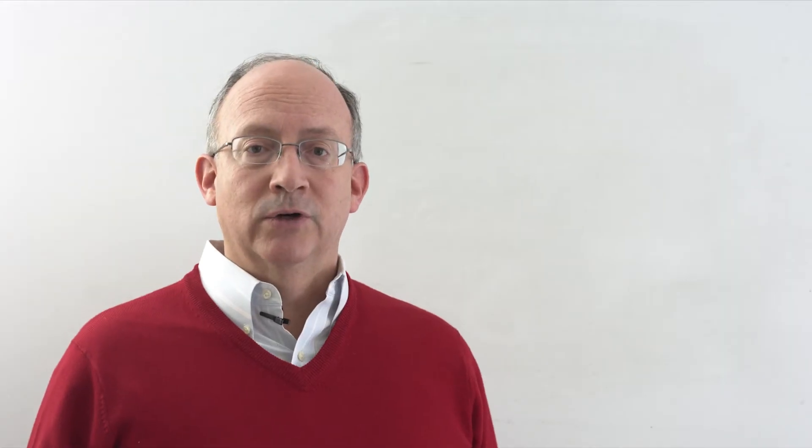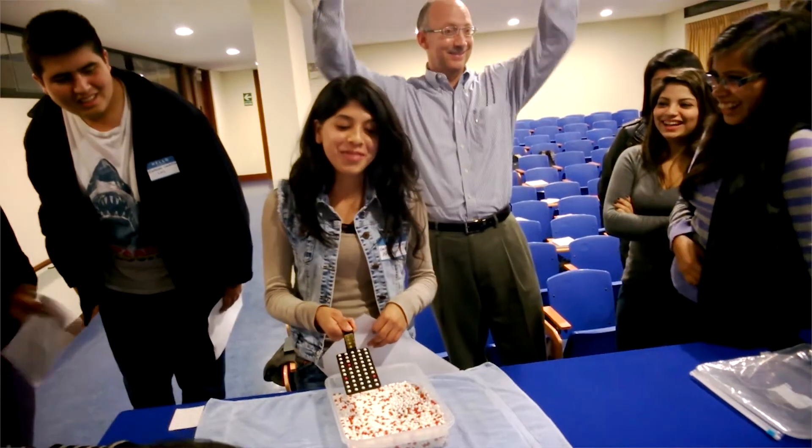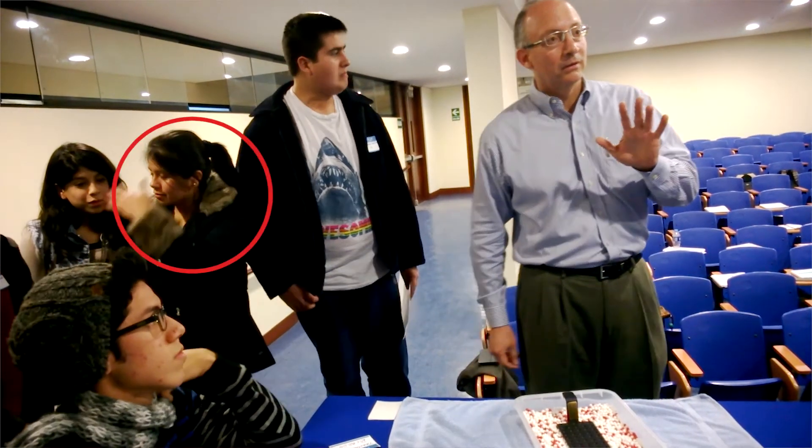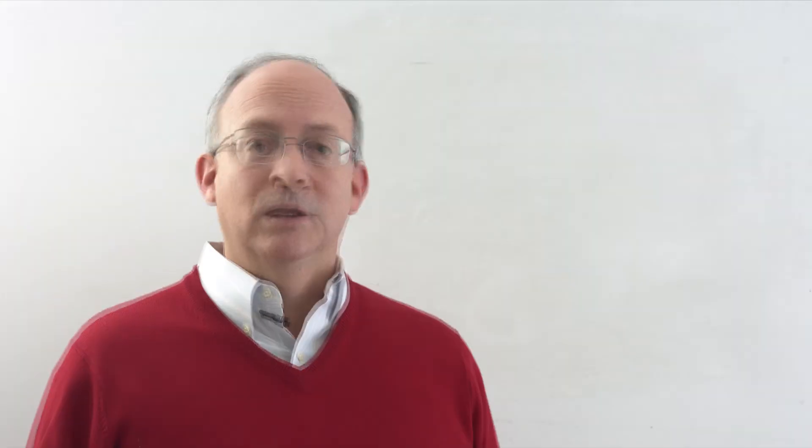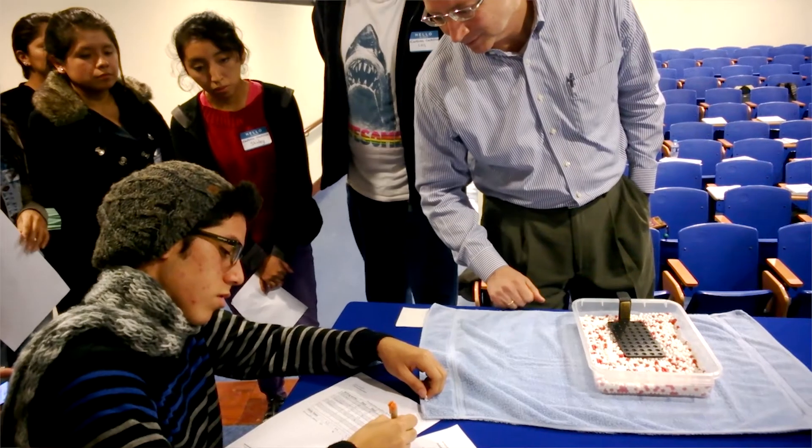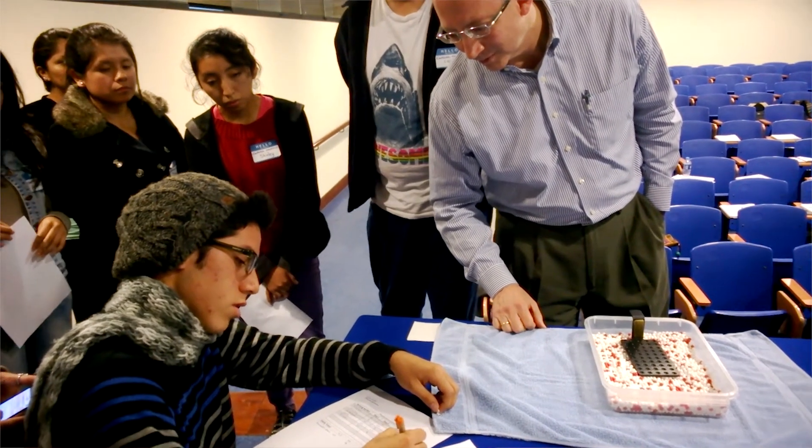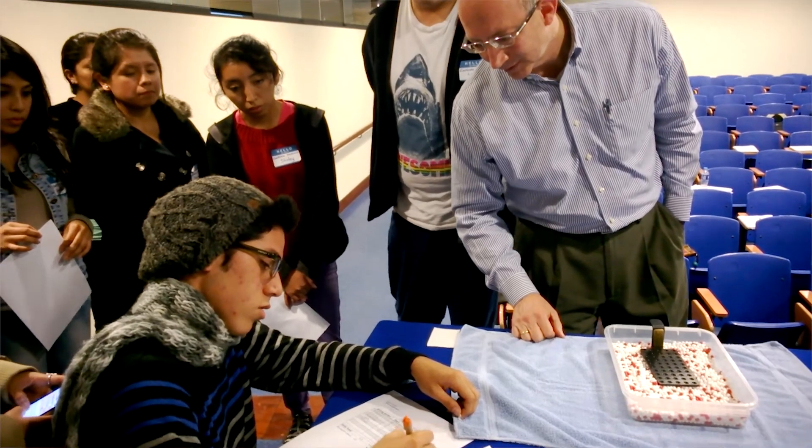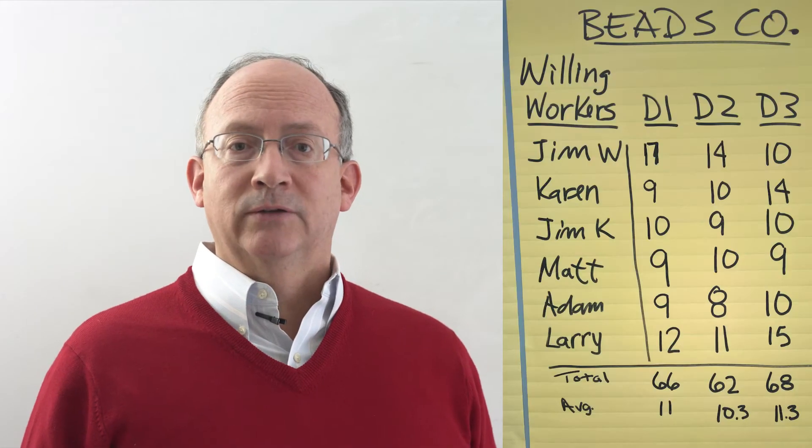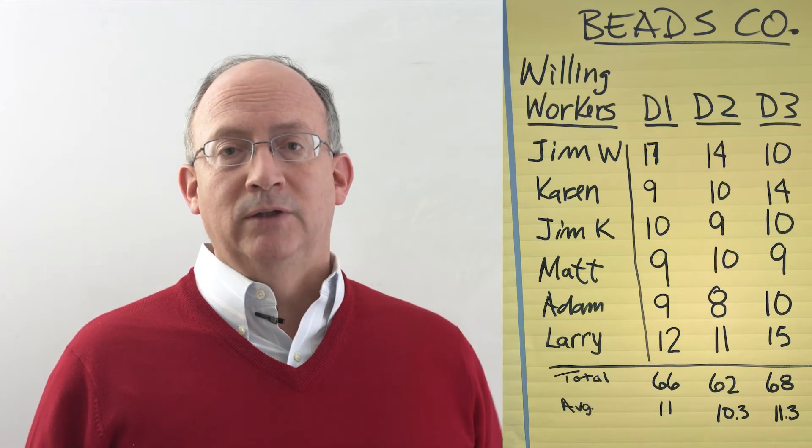After each paddle is drawn, the facilitator compliments or criticizes the worker based on the number of red beads produced. The recorder writes down the number of reds drawn by each worker on a poster or table. At the end of each workday, the recorder adds the number of red beads and calculates a daily average.